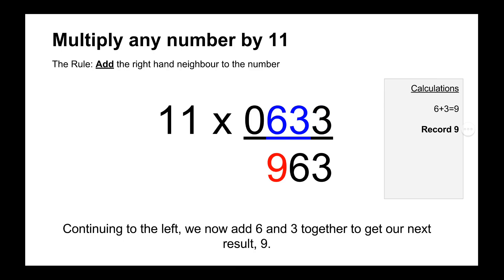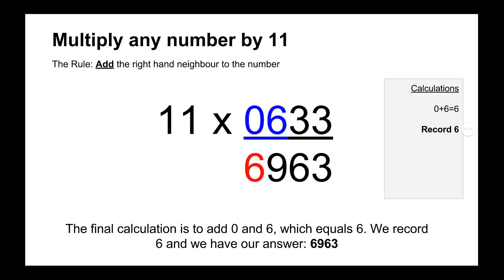And then we move on to our next digit which is 6, and we do 6 plus its neighbor 3 equals 9, and then we record the 9 below. And then we do 0 plus 6 equals 6, and then we record the 6 which is shown in red. And there's our answer, 6,963.